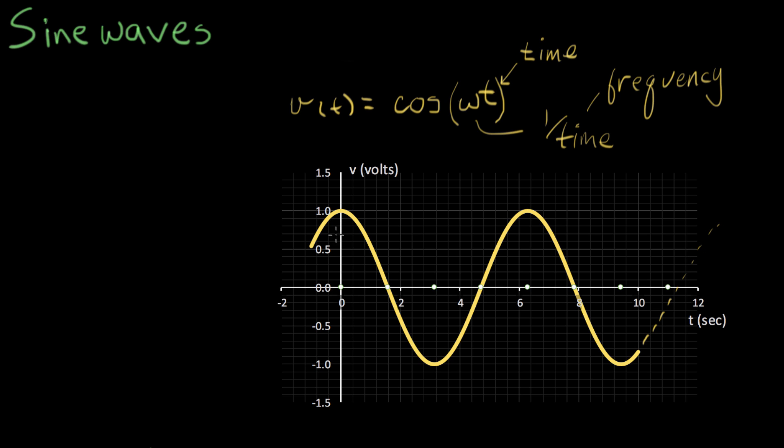So now we've turned our trigonometric cosine function, which is right here, which is something that was well-defined between zero and two pi radians. Notice that I've changed the axis. The axis is now in time over here. And now we're counting off time in seconds.